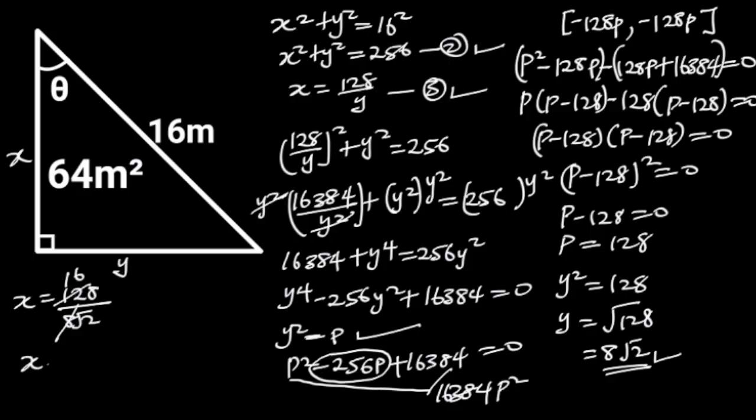So x is equal to 16 over root 2. To rationalize the denominator, we multiply the numerator and the denominator by root 2. And this will give us x is equal to 16 root 2 over 2. 16 divided by 2 is 8. Hence, x is equal to 8 root 2.